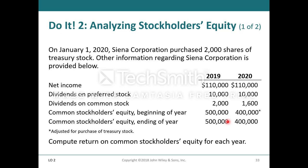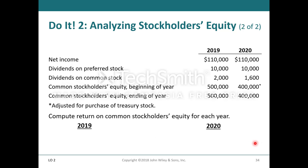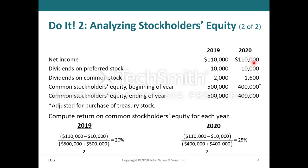Siena Corporation purchased 2,000 shares of treasury stock. Given net income, dividends on preferred stock, dividends on common stock, and common stockholders' equity at the beginning and ending of each year, compute the return on common stockholders' equity for each year. For 2019, take net income of $110,000 minus dividends on preferred stock, divide by the average of beginning and ending common stockholders' equity, yielding 20%. For 2020, the same formula gives 25%.